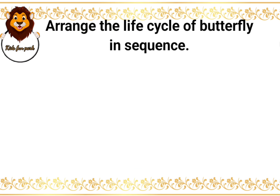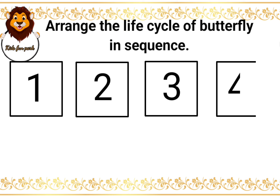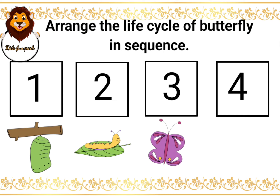Arrange the life cycle of butterfly in sequence. The options given are: Pupa, Caterpillar, Butterfly, Egg.